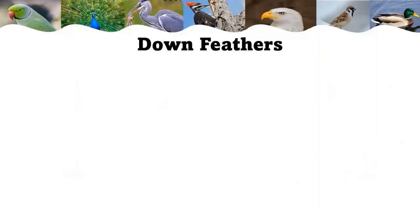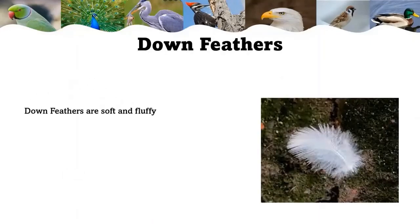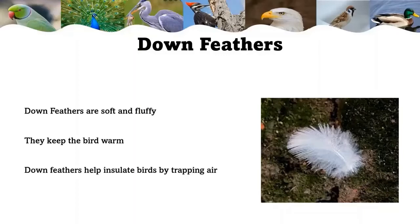Down feathers are soft and fluffy, found next to the skin, and they keep the bird warm. Although it looks like feathers grow all over a bird's body, they actually grow in specific areas called feather tracks. In between the feather tracks are down feathers, which keeps the body weight down. Down feathers have little or no shaft — they are soft and fluffy. Down feathers help insulate birds by trapping air. Some birds such as herons have special down feathers called powder down, which breaks up into fine powder. The bird then spreads this fine powder all over its body to act as a water repellent.